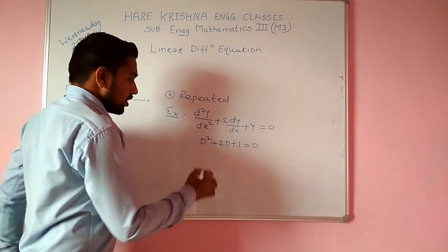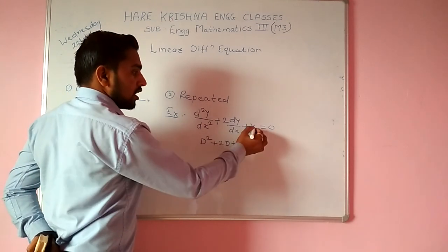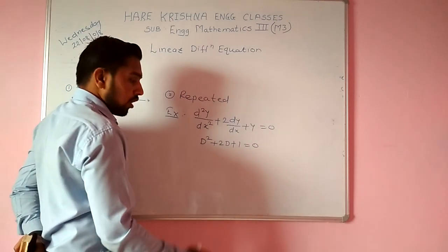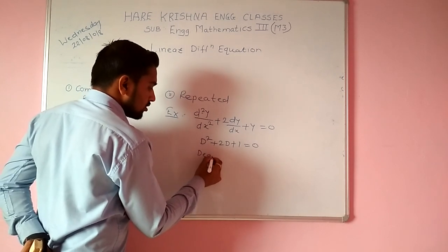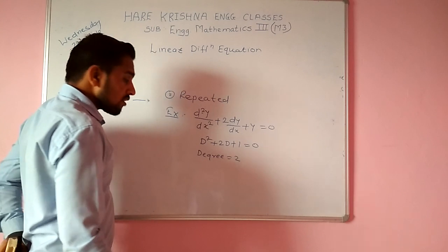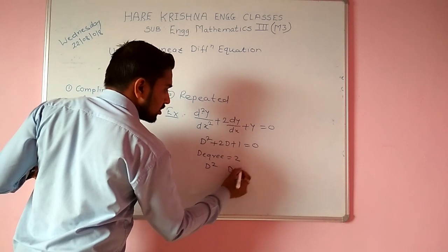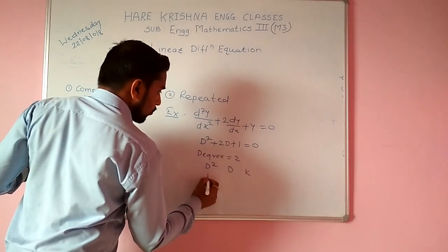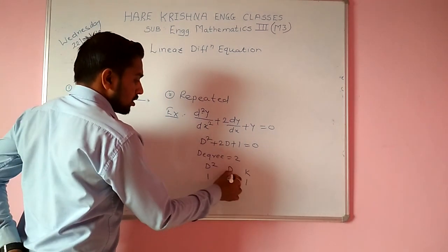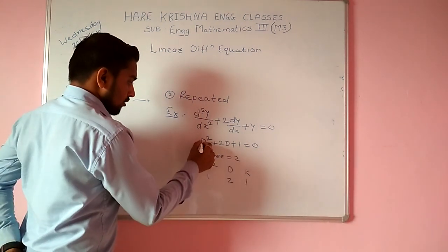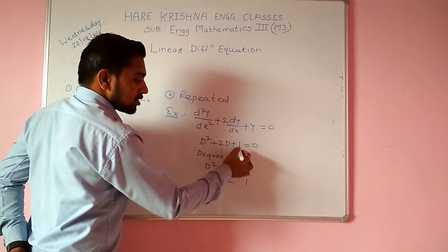As we saw yesterday, D means d/dx. The highest degree here is 2. We put: D² coefficient is 1, D coefficient is 2, and constant k is 1.